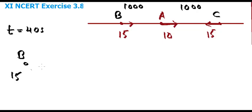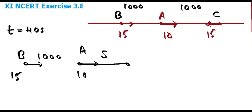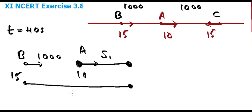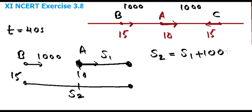B is moving with a speed of 15 m/s, and ahead of it is A moving at 10 m/s in the same direction, with a separation of 1000 m. In these 40 seconds, A will travel some distance S1. B must reach A's new position, traveling distance S2. If B keeps the same speed, it can never reach A in 40 seconds — so B must accelerate. S2 must equal S1 plus 1000 m.